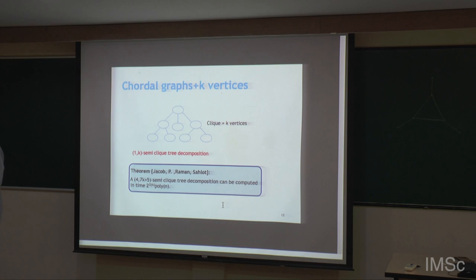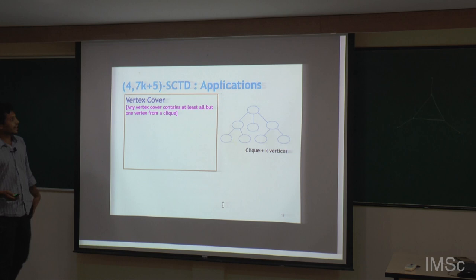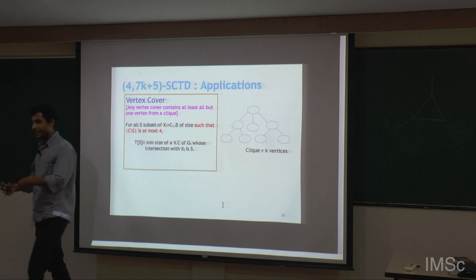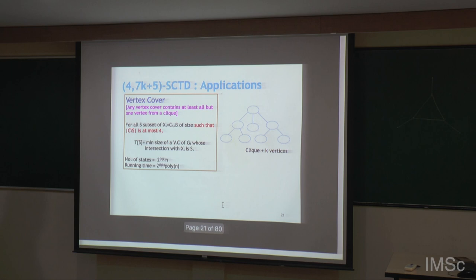This is good enough to get a running time of 2^{O(k)} for the problems mentioned. For any vertex cover, we need all but one vertex from a clique. So from the union of 4 clique parts, we pick all but 4. From the remaining part there are 2^{O(k)} choices, which gives the algorithm.